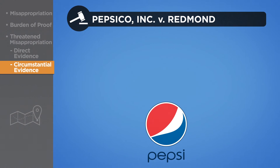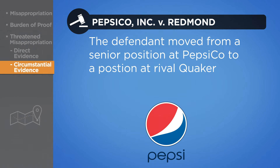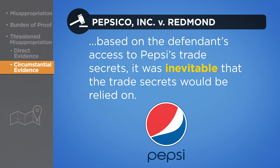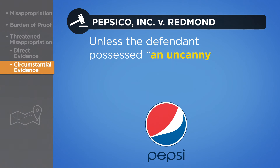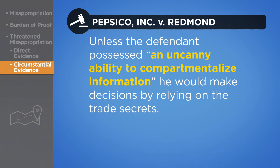For example, in PepsiCo Inc. v. Redmond, the defendant moved from a senior position at PepsiCo to a position at rival Quaker Oats Company, then owner of the Gatorade brand, which is now owned by Pepsi. The court held that it was proper for the district court to conclude that based on the defendant's access to Pepsi's trade secrets, it was inevitable as part of the defendant's new employment that the trade secrets would be relied on. The district court concluded that unless the defendant possessed an uncanny ability to compartmentalize information, he would necessarily make decisions for the new employer by relying on the trade secrets — even though there was no direct evidence that Redmond disclosed any of Pepsi's trade secrets.